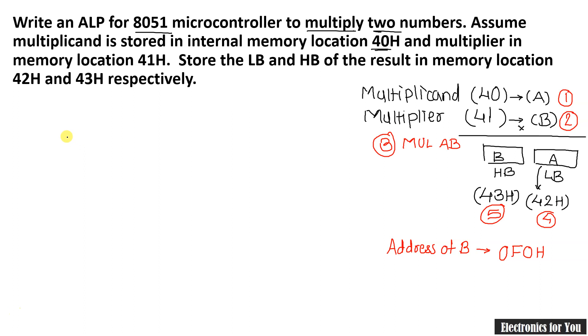And therefore it is 0F0H. So here our first step is to take data into accumulator from 40H. Therefore it is MOV A, 40H. It means that the content of 40H is copied into accumulator.